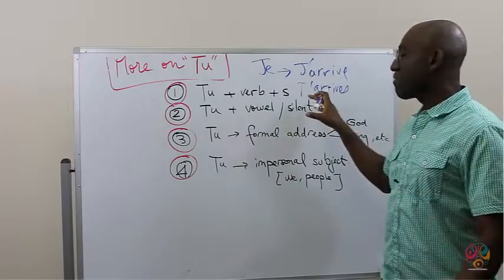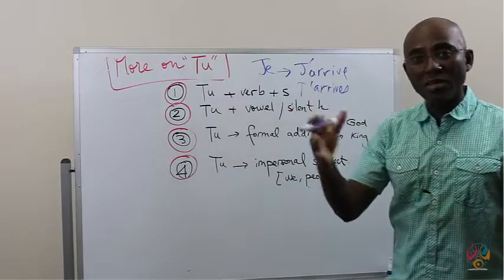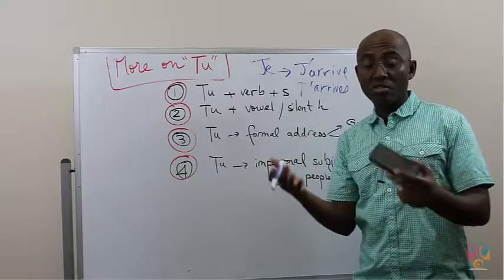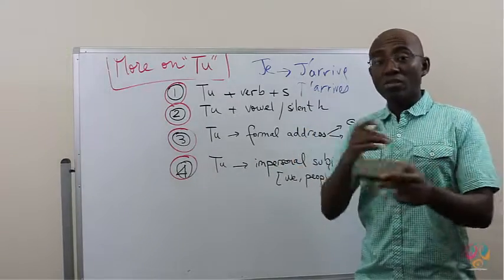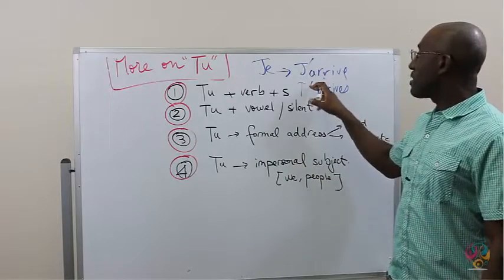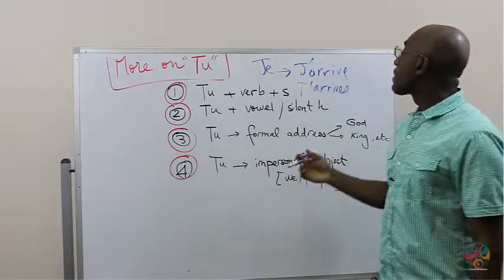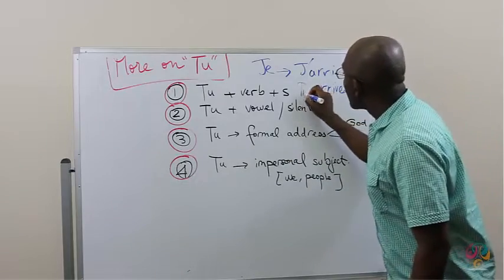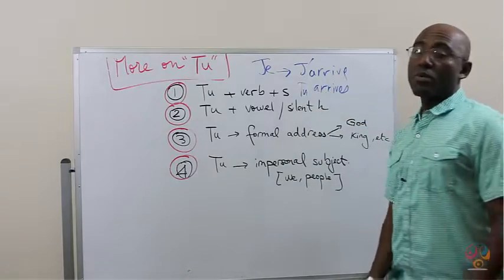You could say T'arrives. But be careful using this with someone that you barely know or someone that even you know in the writing context because the T-apostrophe here is very, very casual. The TU will never change. TU arrive would be correct.